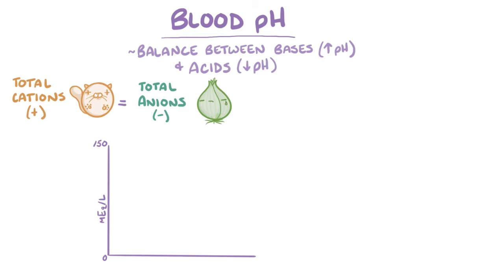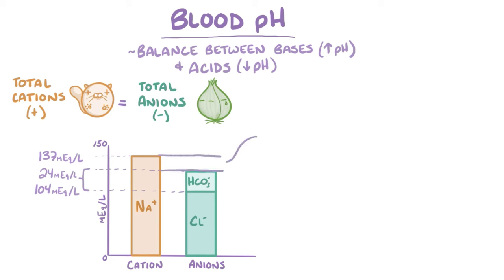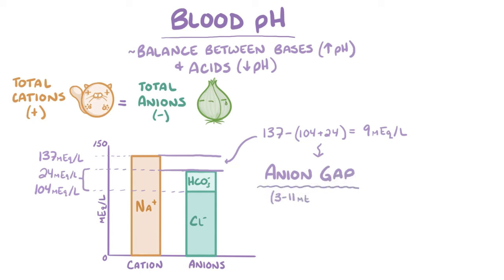Not all of the ions are easy or convenient to measure, so typically only three get measured: the dominant cation, sodium or Na+, which is typically around 137 mEq/L, and the two dominant anions, chloride or Cl-, which is about 104 mEq/L, and bicarbonate, which is around 24 mEq/L. The rest are unmeasured, so counting up these three ions, there is usually a difference or gap between the sodium concentration and the sum of the bicarbonate and chloride concentrations in the plasma, which is 137 minus 128, giving you 9 mEq/L. This is known as the anion gap, and normally it ranges between 3 and 11 mEq/L. The anion gap largely represents unmeasured anions, like organic acids and negatively charged plasma proteins like albumin.